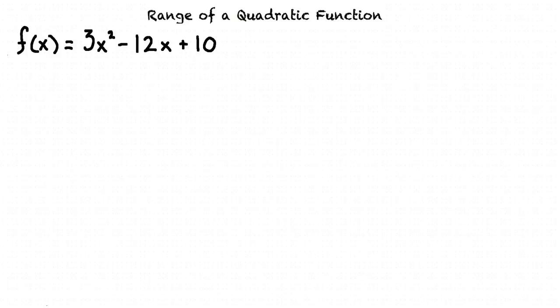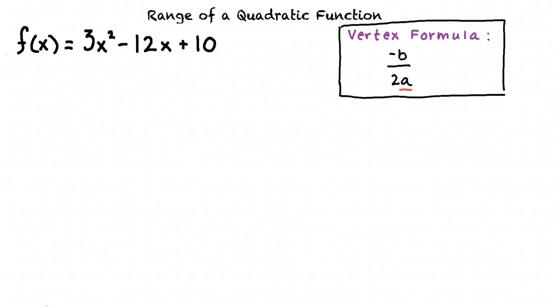To do this, we will first need to calculate the vertex using the vertex formula, negative b over 2a. a is the constant in front of the leading term, so in our case, our a is 3.